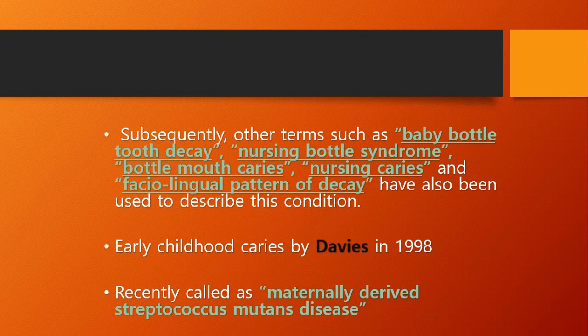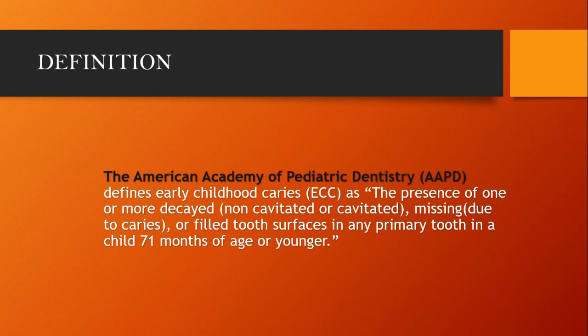Subsequently, other terms such as baby bottle tooth decay, nursing bottle syndrome, bottle mouth caries, nursing caries, and faciolingual pattern of decay have also been used to describe this condition. Early childhood caries was termed by Davies in 1998 and it is recently called Maternally Derived Streptococcus Mutans Disease II.